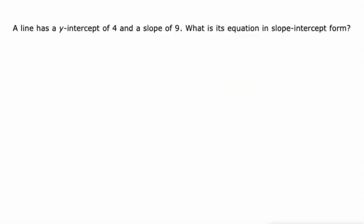So a line has a y-intercept of four and a slope of nine, write its equation in slope intercept form. Well it's y equals slope times x plus the y-intercept.